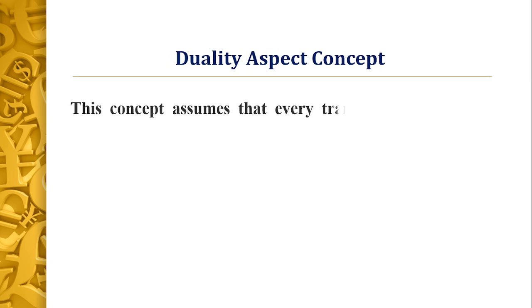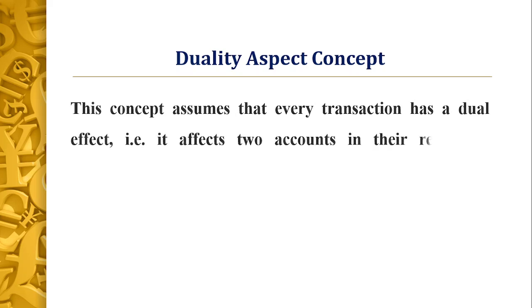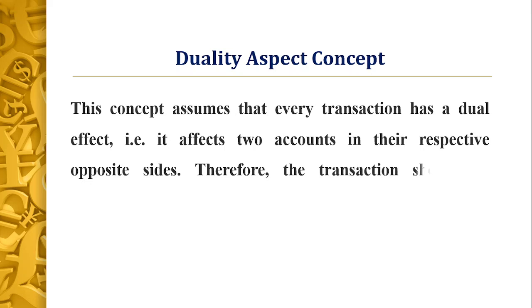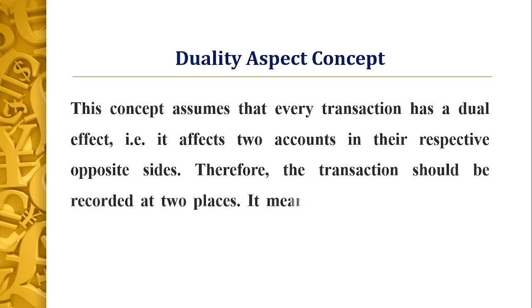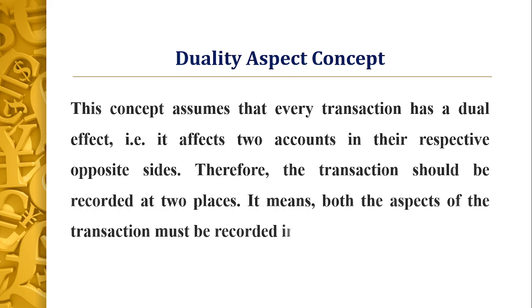The dual aspect concept, also called the duality aspect concept, assumes that every transaction has a dual effect. It affects two accounts in their respective opposite sides, and therefore the transaction should be recorded at two places. Both aspects of the transaction must be recorded in the books of accounts. We follow the double entry system to record business transactions, and therefore every transaction has two effects — one is the debit and the second one is the credit.